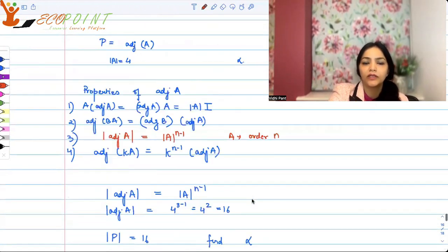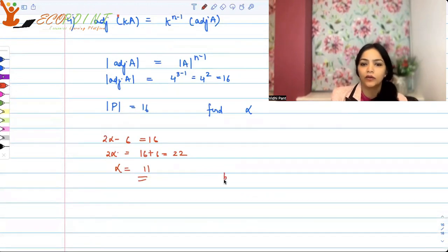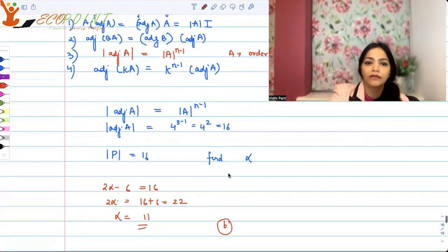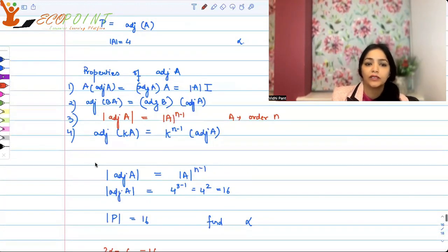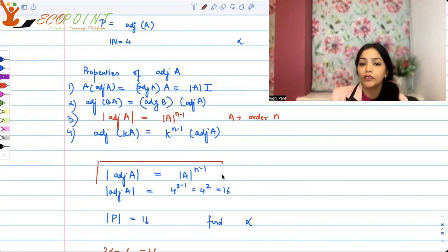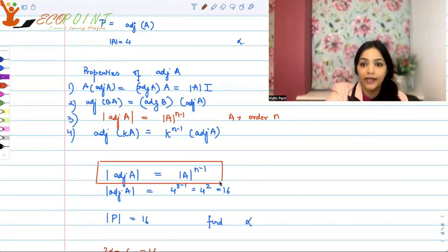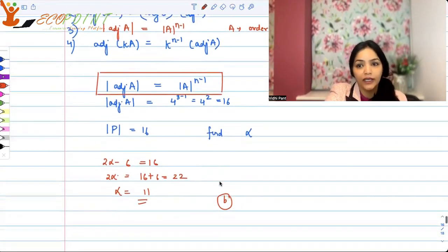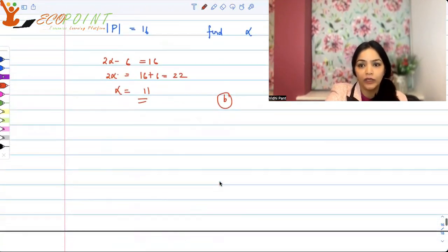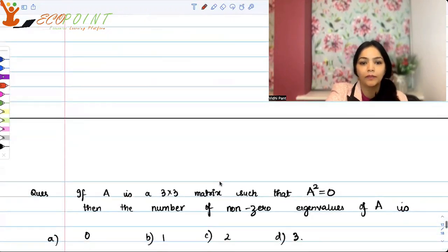So 11 is the correct answer, option B. The property we used is: the determinant of the adjoint matrix equals the determinant of the original matrix to the power n minus 1, where n is the order of the matrix.